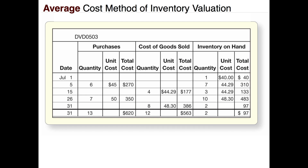On July 31st we make another sale of eight items, using our current average cost of $48.30 to cost those items. Remember, this chart reflects only costs, not revenues. The cost of that sale is $386, leaving us two items in ending inventory at $48.30 each for a total of $97.